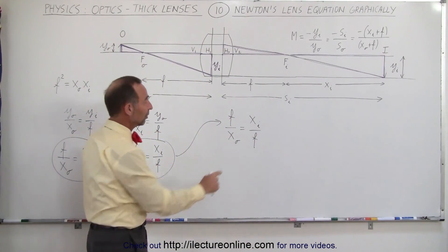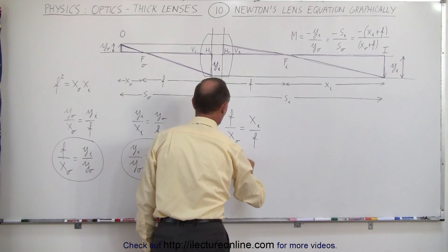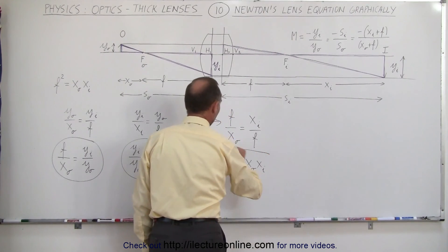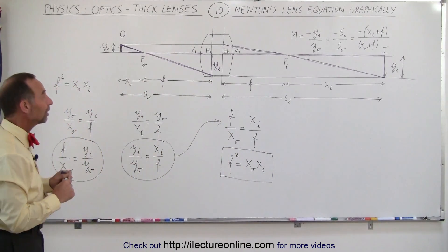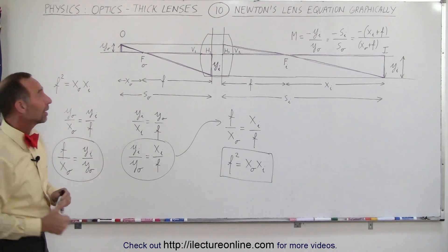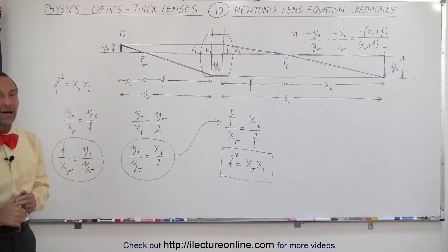And all we have to do is move this f over here, move that x sub O over there, which means that f squared is therefore equal to x sub O times x sub i. And here again, we end up with Newton's lens equation, simply from looking at the triangles of the rays going through the lens from the object to the image. And that's how it's done.